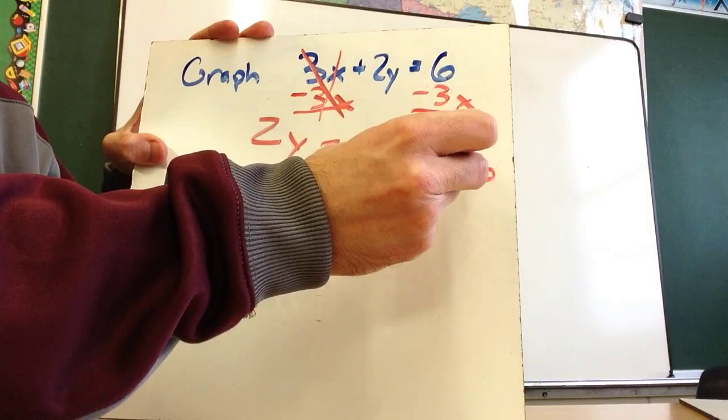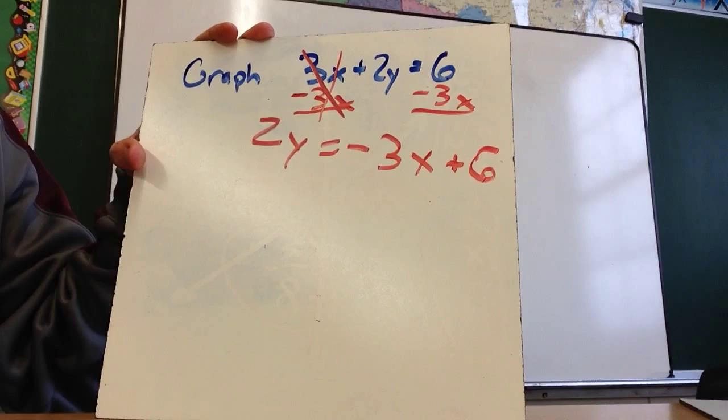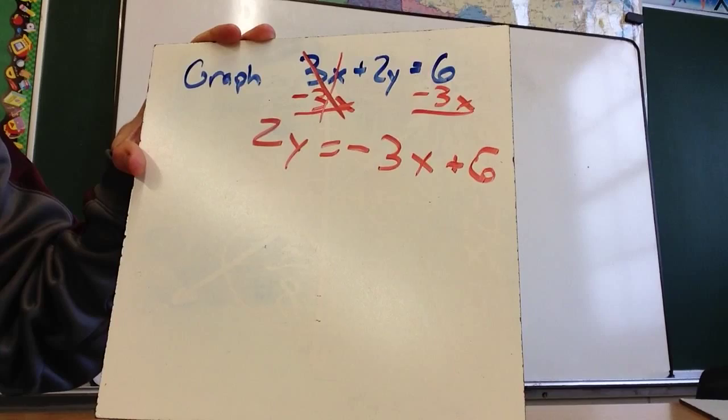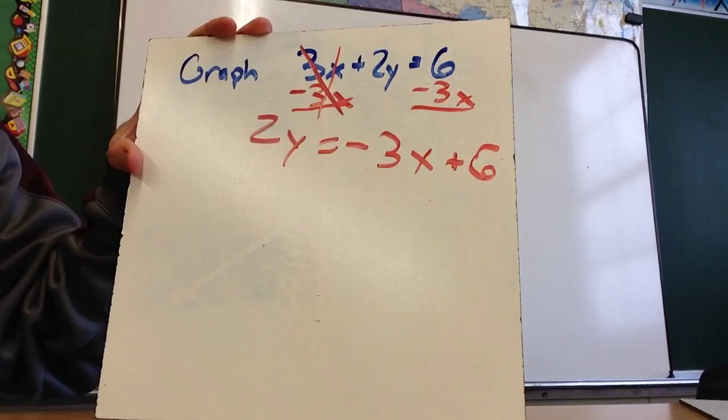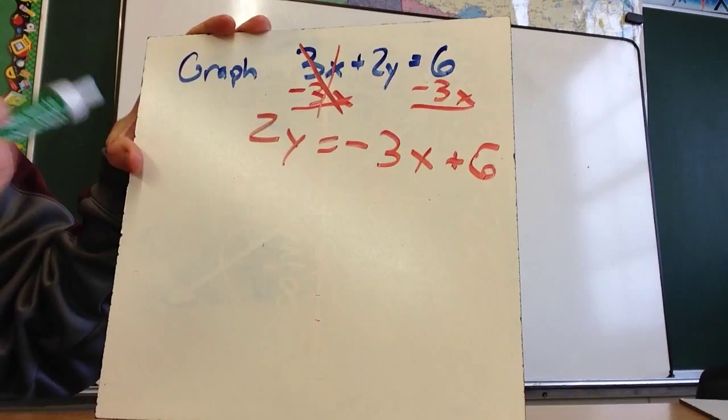Now some people would write this as 6 minus 3x. The reason I want to write it this way is because I want it to be in mx plus b form. So I want the x towards the left of this expression, and I want the constant on the right. But I'm not quite done yet because this is 2y equals mx plus b, and I want it to be y equals mx plus b.